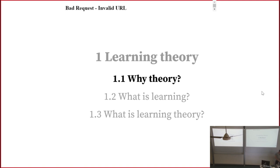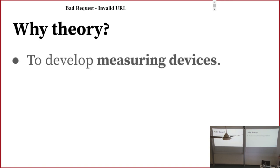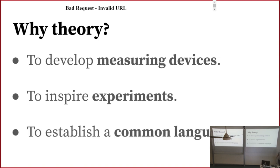Why theory? I come at this from a background in theoretical physics, and I think of the role of theory as having three main functions. First, theory helps us develop measuring devices — what we would in AI call interpretability tools. We want to understand what's going on inside these systems. Next, theory helps us because it tells us where to look, where to direct our experimental apparatus. And third, maybe the most important, it helps us establish a common language between theorists and experimentalists so we can do good work.